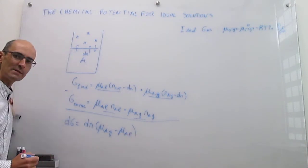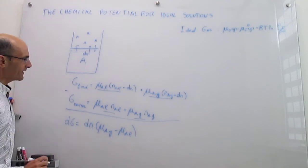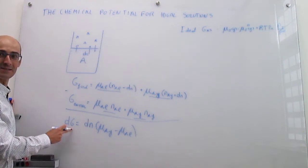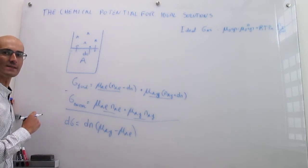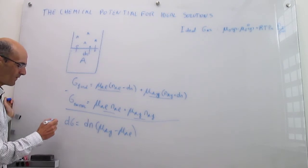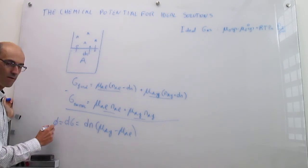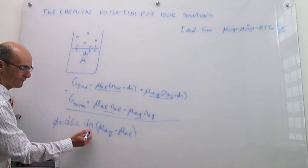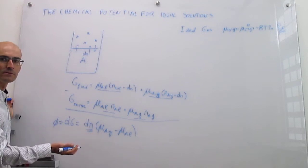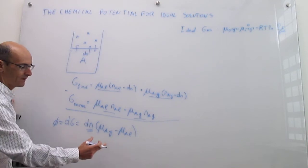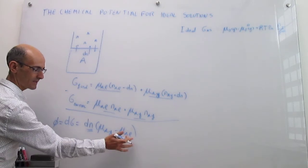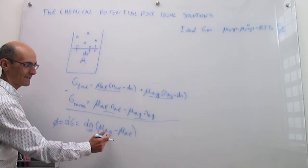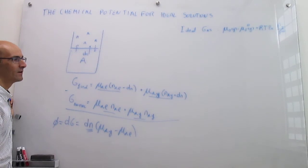Here comes the most important point in this whole video. This system is at equilibrium, which means that dG is zero for either vaporization or condensation — those processes take place at equilibrium. Since dn can never be zero (it represents a finite amount of liquid turning into gas), the only possibility is that the parenthesis is zero. That means the chemical potential of the gas must be exactly identical to the chemical potential of the liquid.